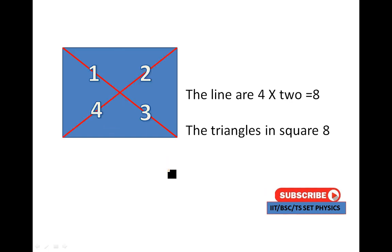Next case, the lines are 4. You count the lines at midpoint to endpoint. Then 1 and 2 and 3 and 4. The lines are 4 into 2 equals 8. The triangles in squares equal 8. Then the total triangles are 8.